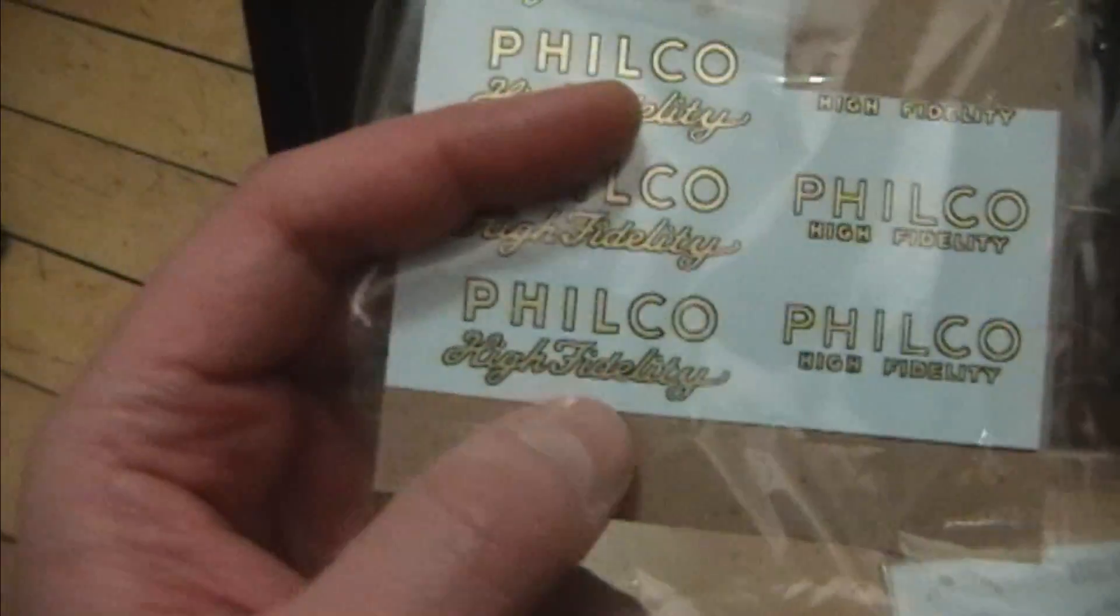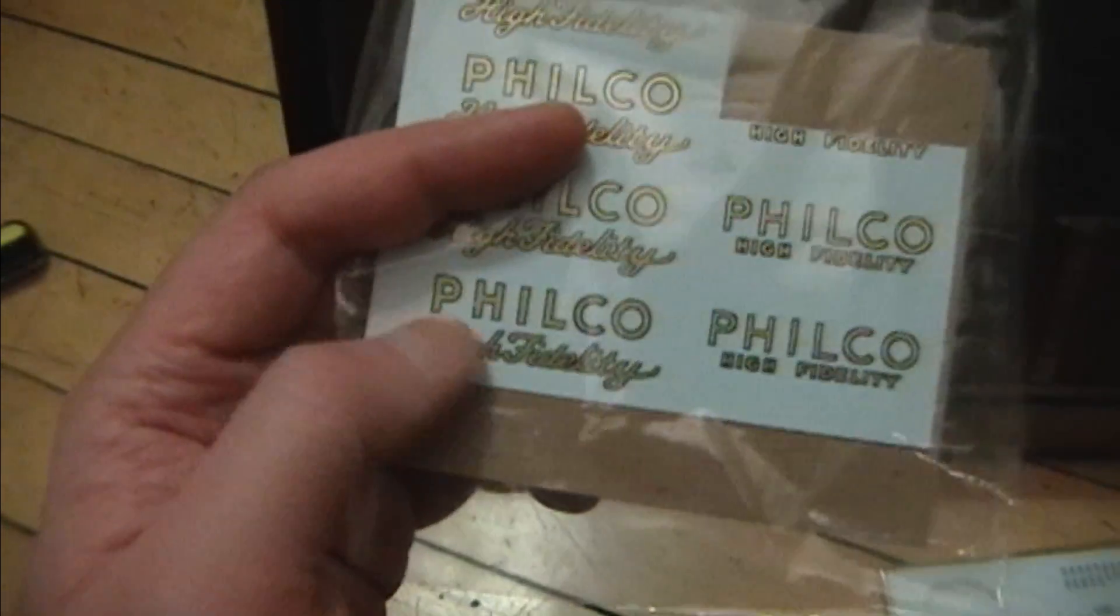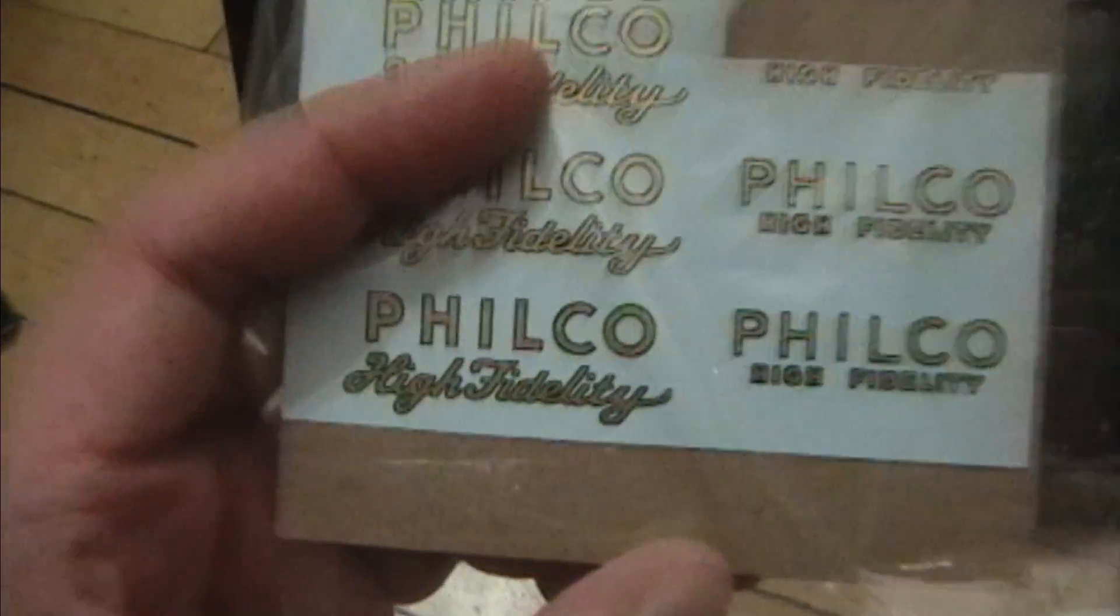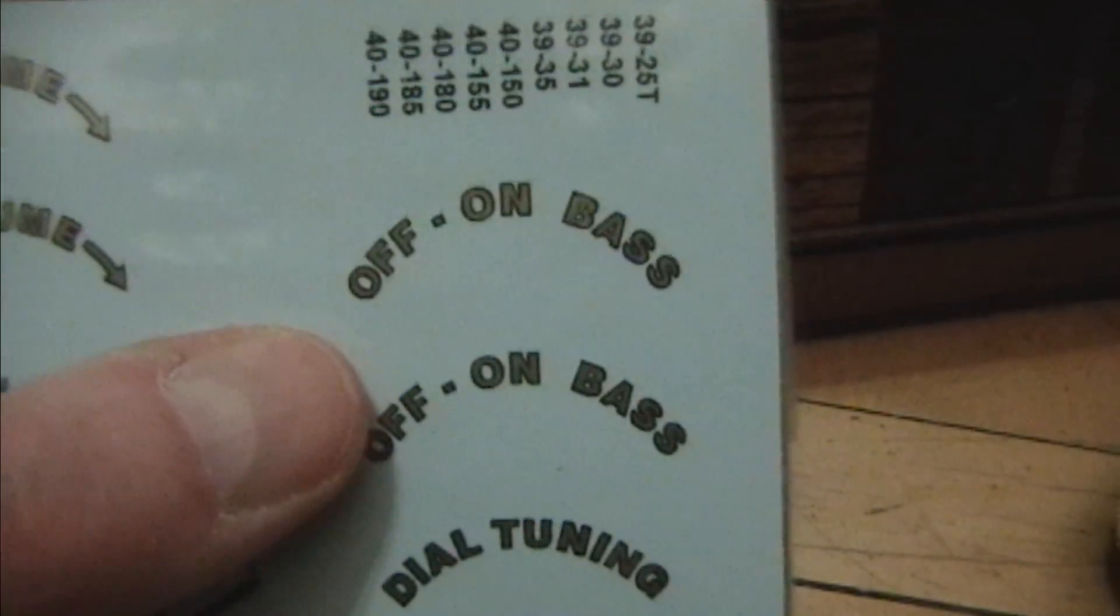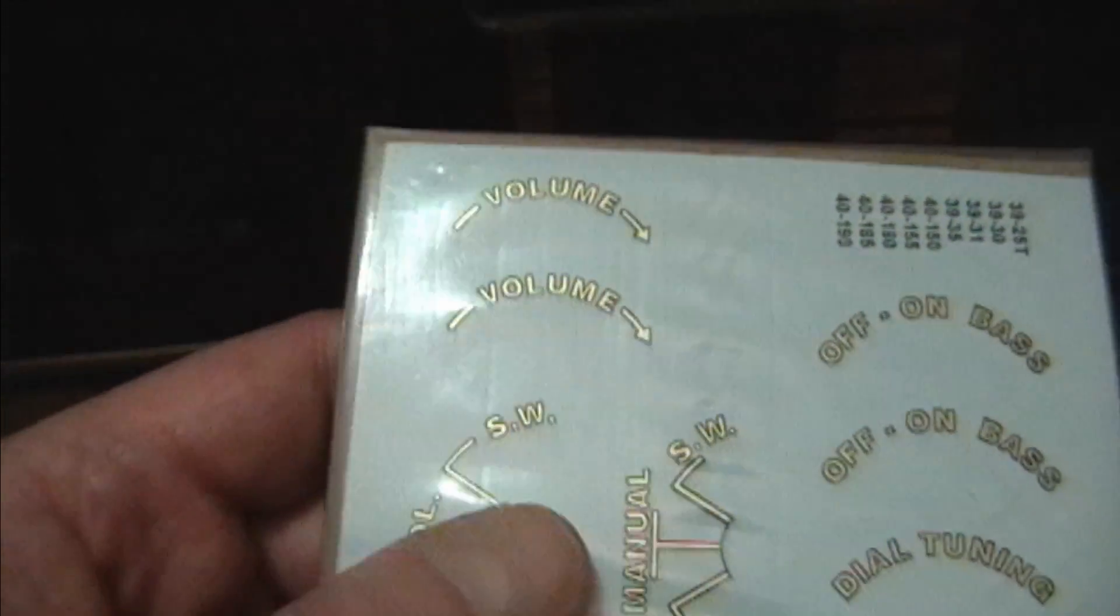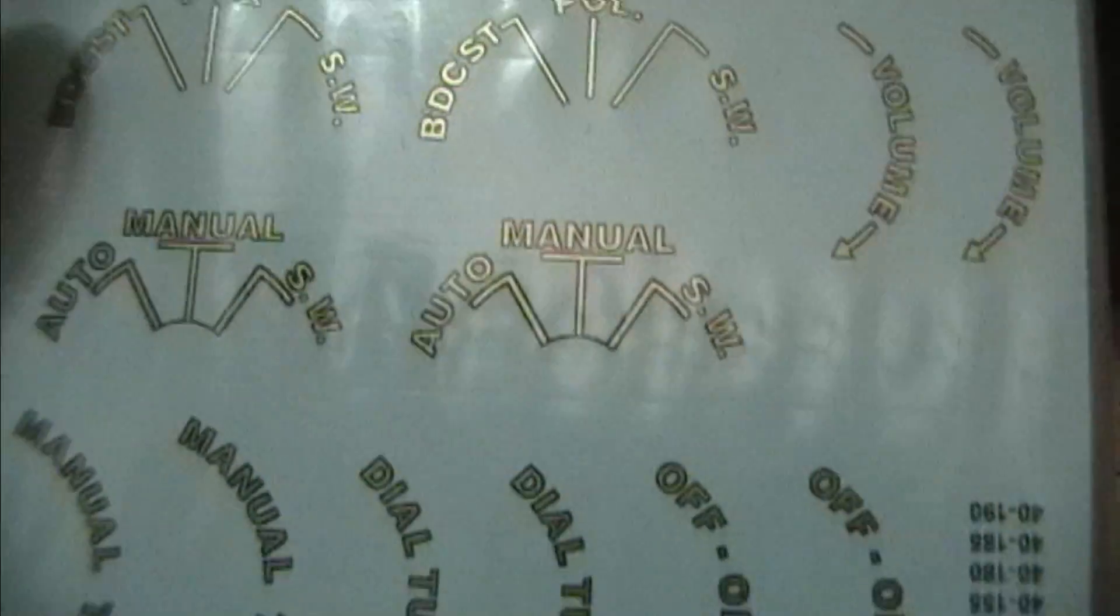This one on the left here is a pretty darn good match for the original, but not with this High Fidelity, so I'll have to clip that out and apply that right up here. And here's a reproduction set for the rest. So we've got Off, On, Bass for this guy, and then we get Volume. And then Auto, Manual, Shortwave, Auto being the preset mode, and finally Manual Tuning for the far right.